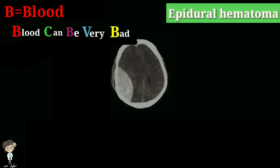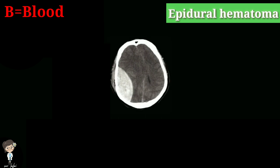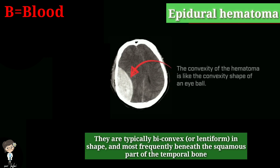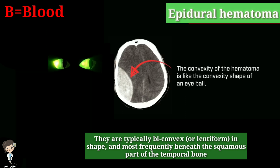First, B stands for Blood, in which we will learn epidural, subdural hematoma along with intraparenchymal and intraventricular hemorrhages and subarachnoid hemorrhage. To identify epidural hematoma, they are biconvex in shape, same like an eyeball — you can remember E for epidural and E for eyeball.